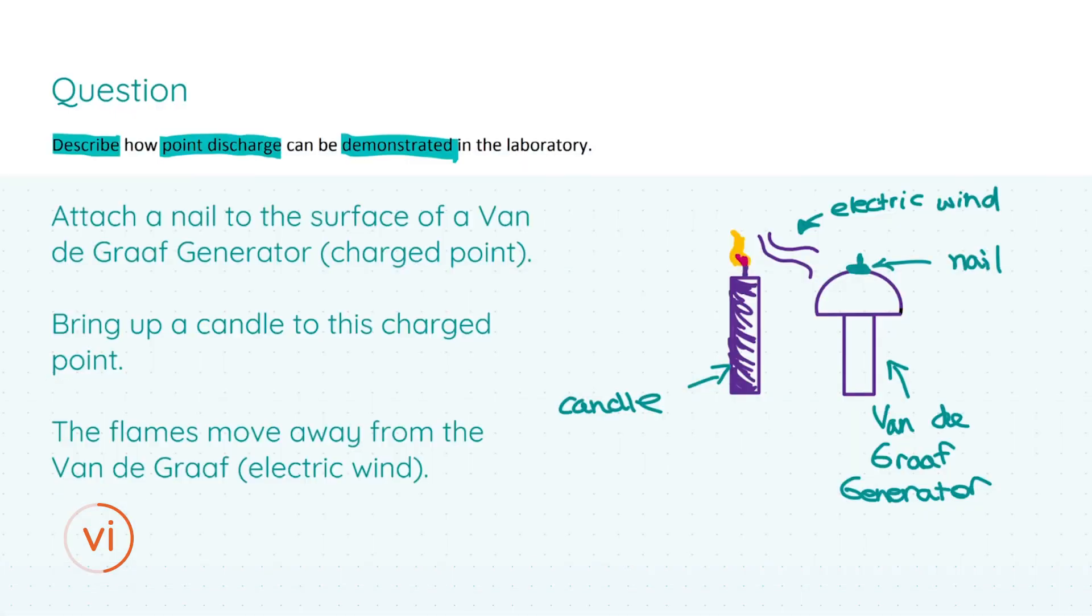Finally, we are asked to describe how point discharge can be demonstrated in the laboratory. Again, I have included a diagram. First things first, we're going to attach a nail to the surface of a van de Graaff generator, which is the charge point in question. That will get you your first three marks. For your next three marks, you have to bring a candle to this charge point, and what will you notice? You will notice that the flames move away from the van de Graaff, creating an electric wind, just like we saw in the previous part where we were explaining how point discharge occurred. A van de Graaff generator basically generates a lot of charge, which then is transferred to the charge point or the nail.